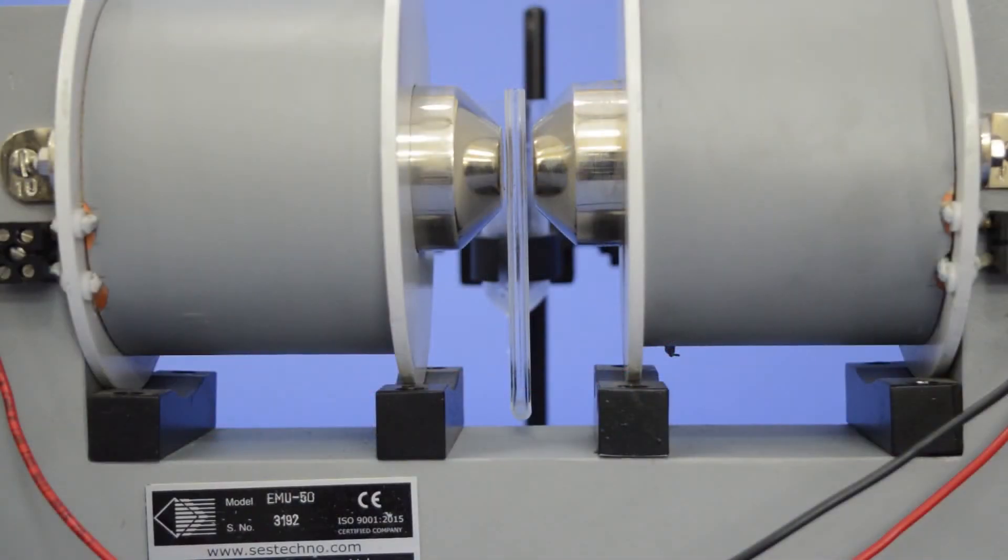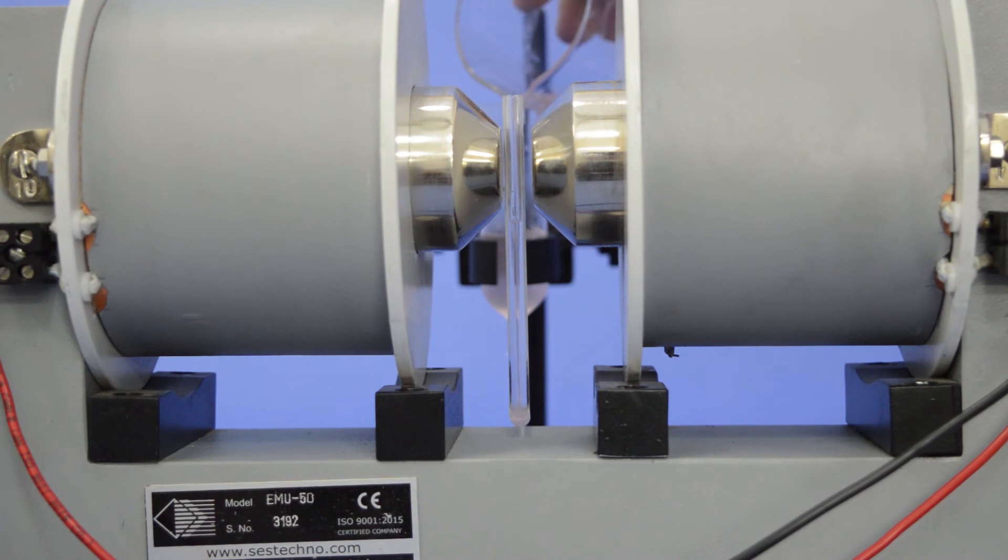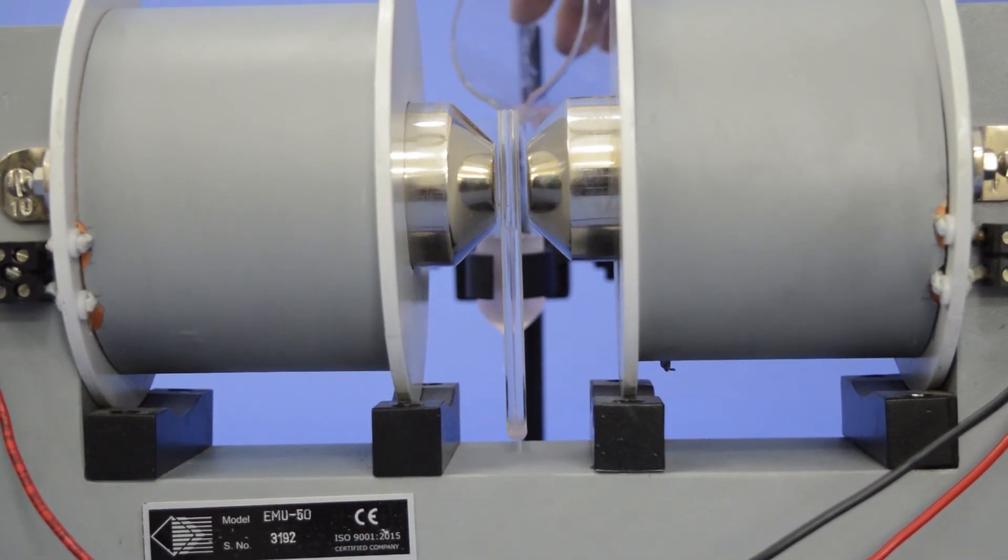Fill the prepared solution in Kuhn's tube. Keep the level of solution around the center of pole piece.